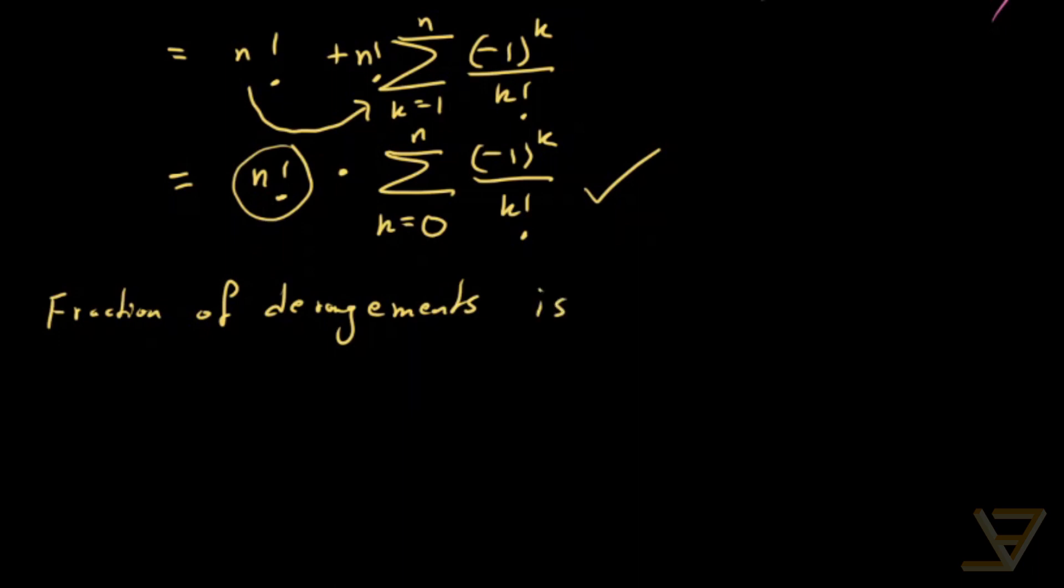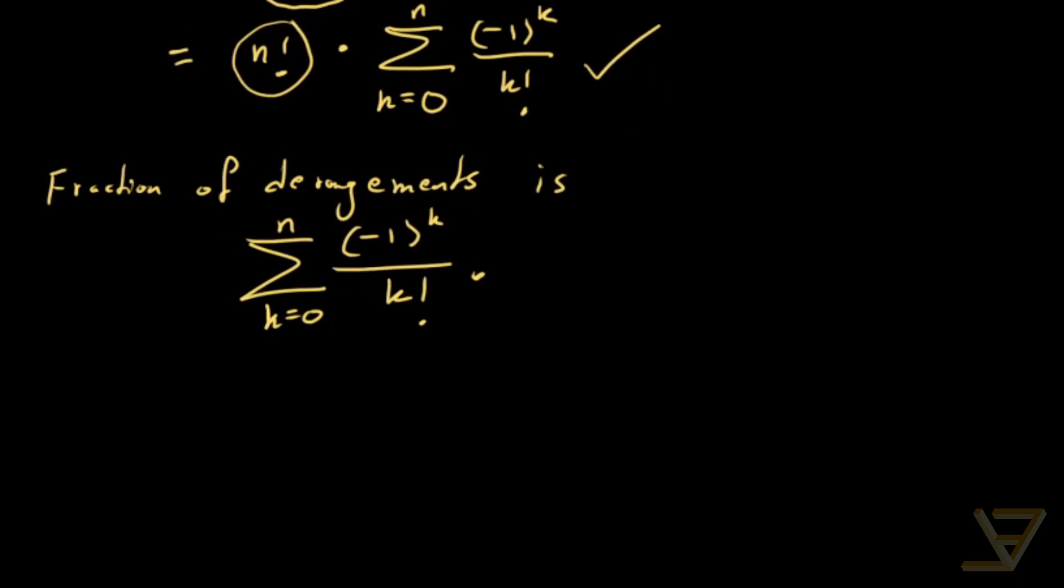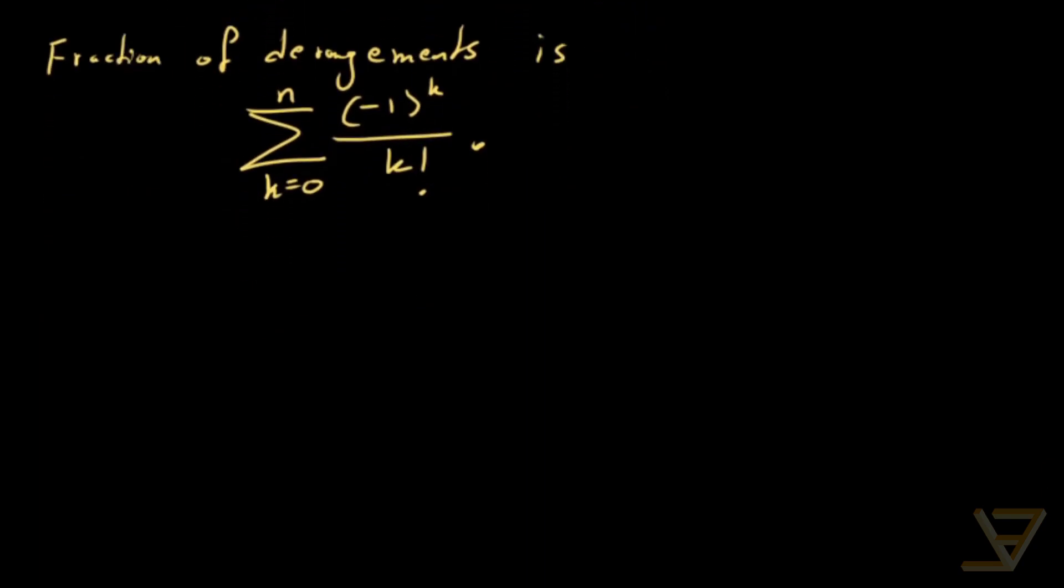Is this sum k equals 0 through n negative 1 to the k divided by k factorial. Now for those of you who are familiar with some degree of calculus or analysis, might notice that this is very similar to the expression for 1 over e. And so what this means is that the fraction of derangements as n goes to infinity is this sum k equals 0 through infinity of negative 1 to the k over k factorial. And that's equal to e to the negative 1 which is 1 over e.